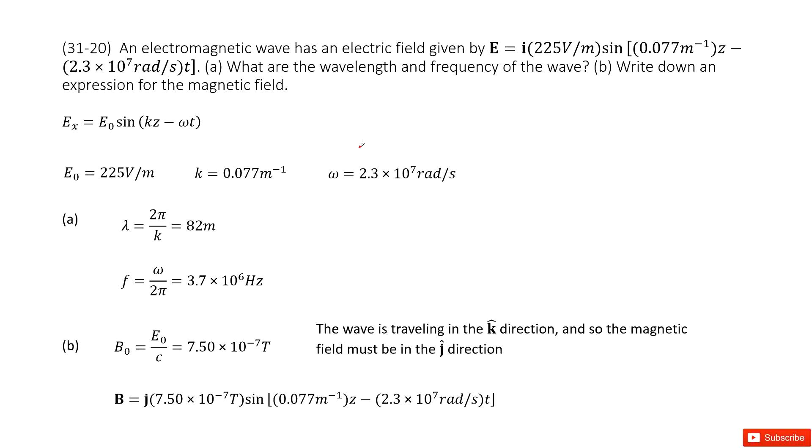Chapter 31 is about Maxwell equations and electromagnetic waves. Now we know the electric field is given in this function. We can say this only has an x component, ex, so that means the electric field is in the x direction.